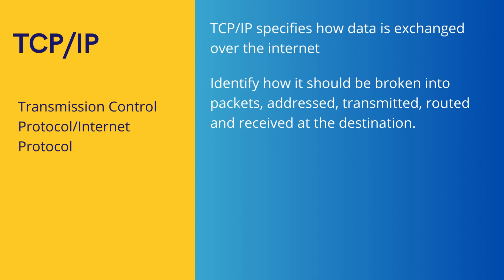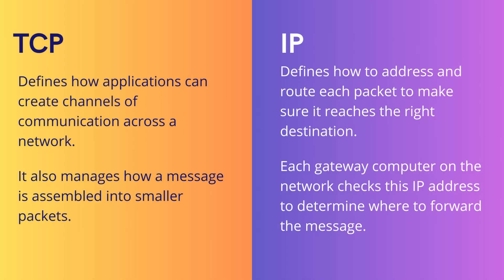This protocol specifies how data is exchanged over the Internet, and also identifies how the data we pass should be broken into packets, addressed, transmitted, routed and received at the destination. The TCP stack defines how applications can create channels of communication across the network and manages how a message is assembled into smaller packets. The IP stack defines how to address and route each packet to make sure it reaches the correct destination.